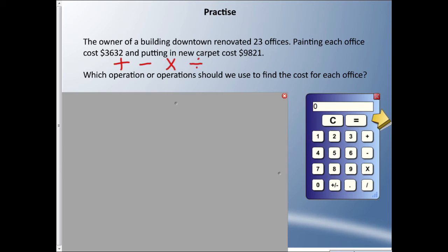Which operation or operations should we use to find the cost for each office? It's going to be either addition, subtraction, multiplication, or division, or a combination. Since I like to do different questions, you could probably guess we're going to have a combination. Let me pause and I want you to consider which operations we're definitely going to be using.